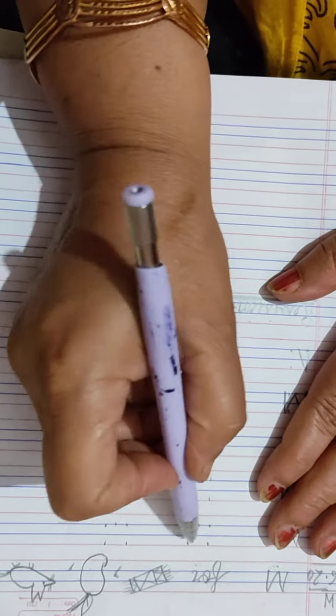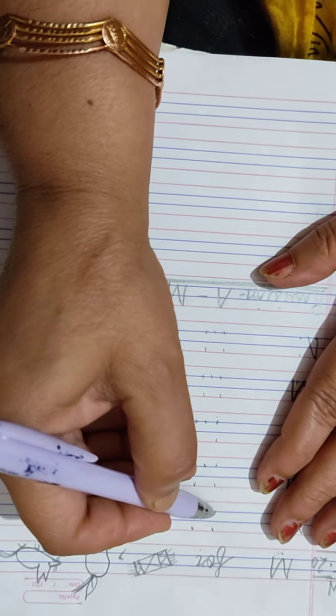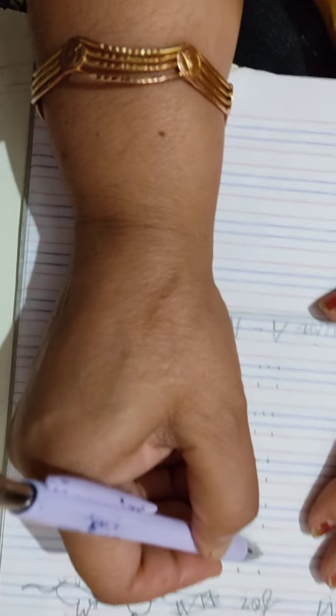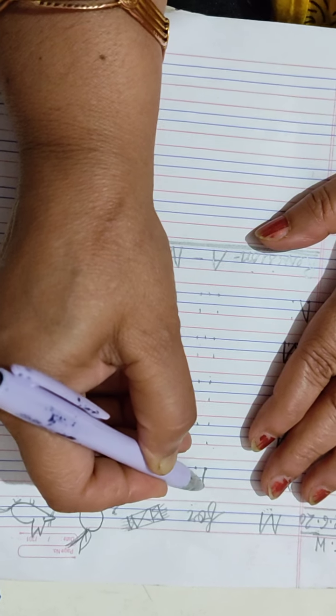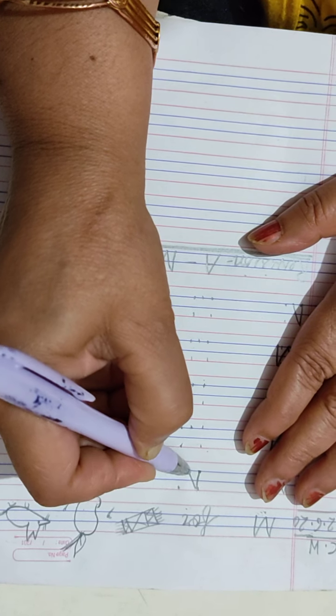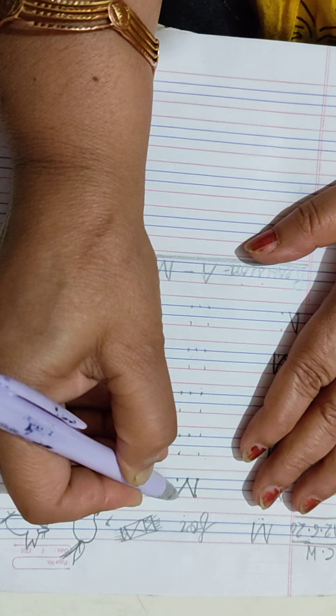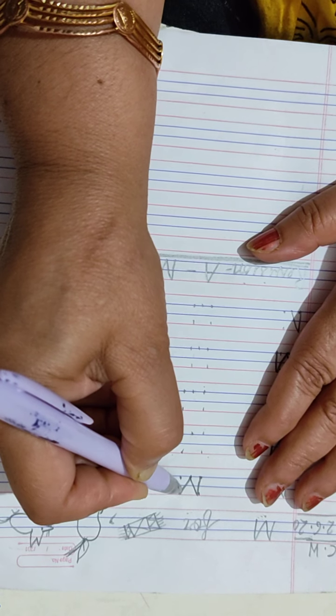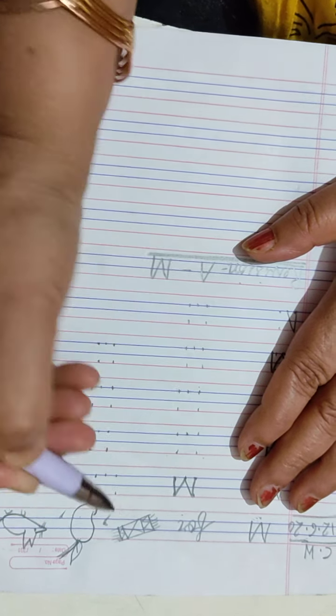Look at here now. Follow me. First one, start from here. Make standing line, slanting line, again slanting. Other one, standing line.